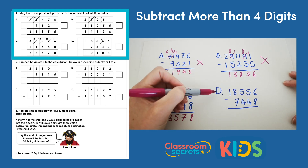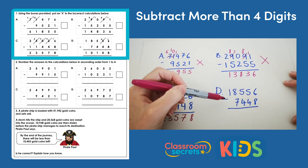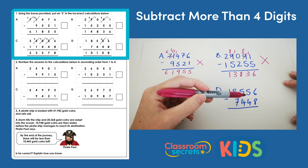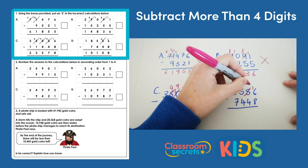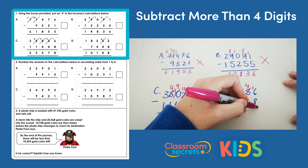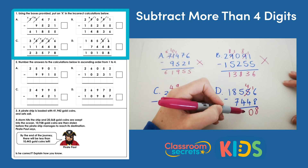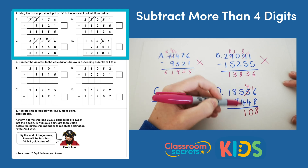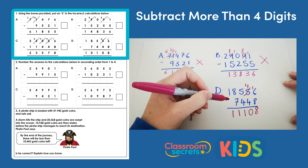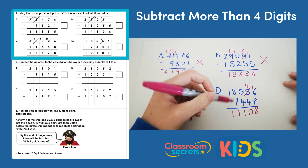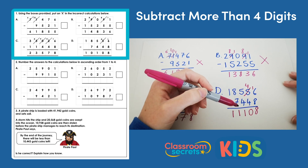Finally, d: 18,556 subtract 7,448. 6 subtract 8 — we can't do, so we need to do an exchange. 16 subtract 8 is 8; 4 subtract 4 is 0; 5 subtract 4 is 1; 8 subtract 7 is also 1; and 1 subtract 0 is also 1, so the answer is 11,108.